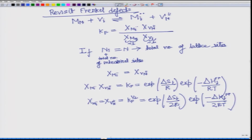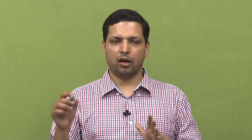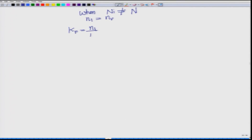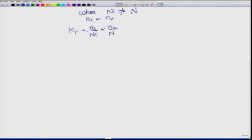This will be a little different when n_i is not equal to n — you may already recall from the earlier derivation for equilibrium concentration. Let us consider when n_i is not equal to n, but what we still have is that n_i equals n_v, meaning the number of interstitial sites equals the number of vacancy sites, because this is the dominating defect. So n_i by N_i (where N_i is total interstitial sites and lower-case n_i is the actual number used) times n_v by n, equals the right-hand side: exp(delta S_f / R).